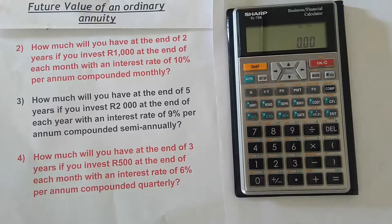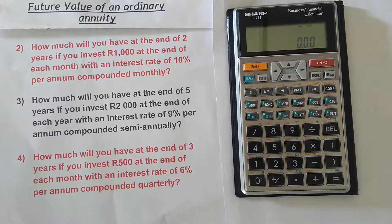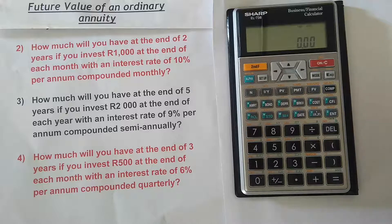Welcome to Counterparts. In this lesson we're going to be continuing with the future value of an ordinary annuity — how to calculate it using the financial calculator, the Sharp EL-738. In our first lesson we calculated the future value for a simple example with annual payments and annual compounding, but in this one we're going to focus on when payments occur more than once per year, or the interest rate is compounded more than once per year, and what you do when your payment compounding differs from your interest rate compounding.